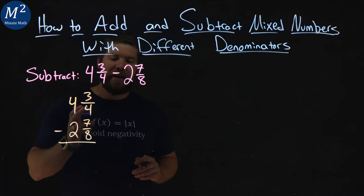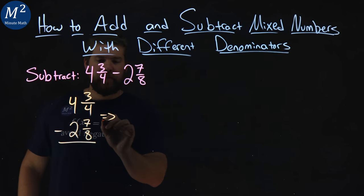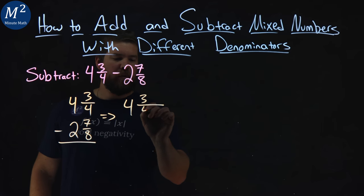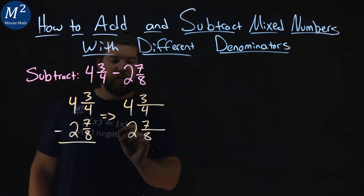We know we're going to be subtracting these fractions, so we need to have a common denominator. So let's rewrite this: 4 and 3 fourths and 2 and 7 eighths, we're subtracting.